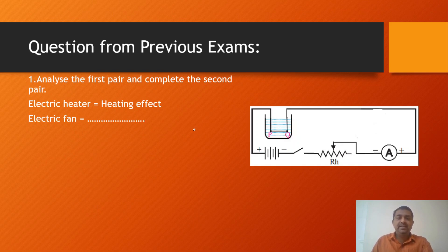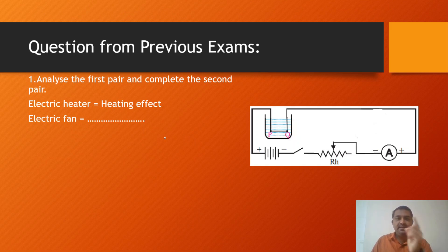Analyze the first pair and complete the second pair. Electric heater — heating effect. We know that in the electric heater, it produces a heating effect. If there is an electric fan, it produces a mechanical effect.